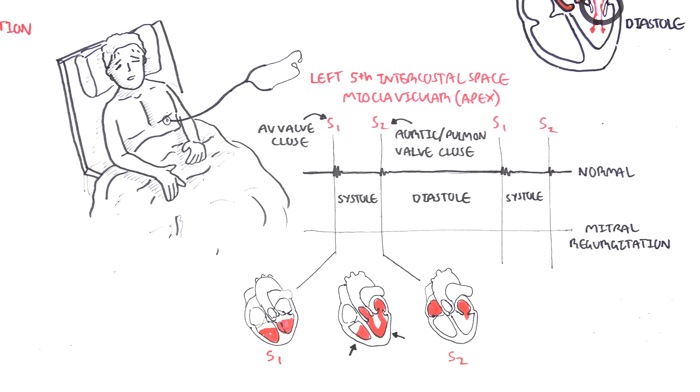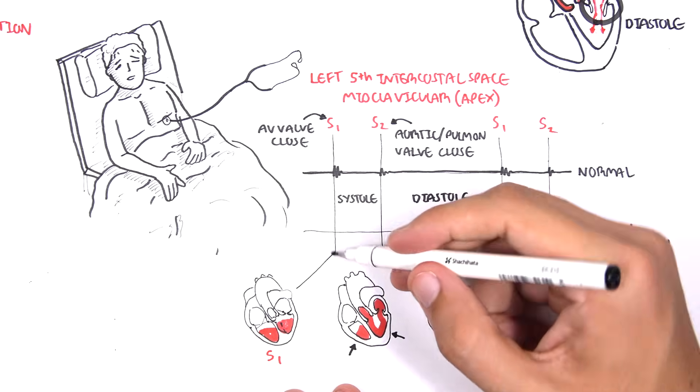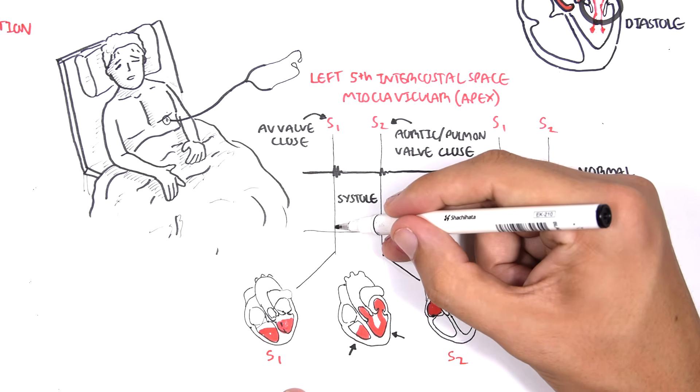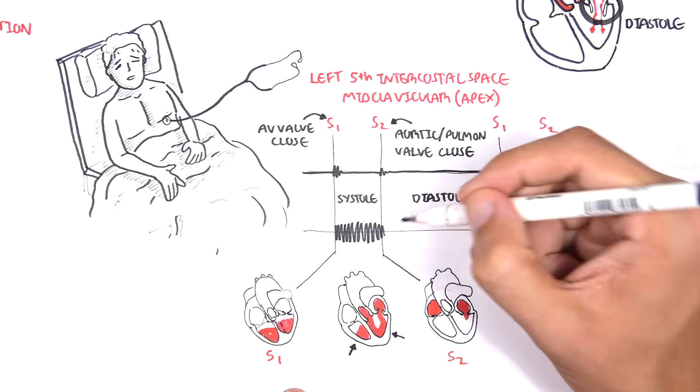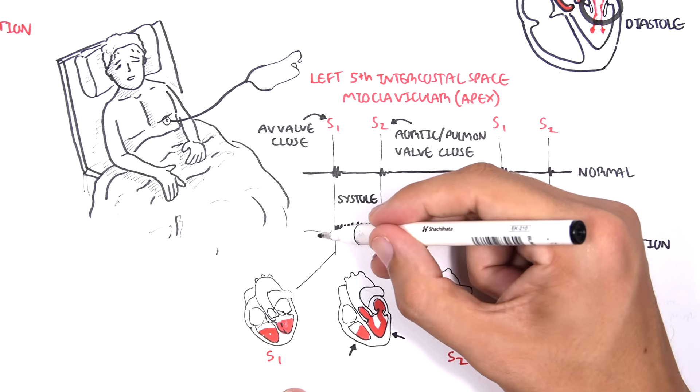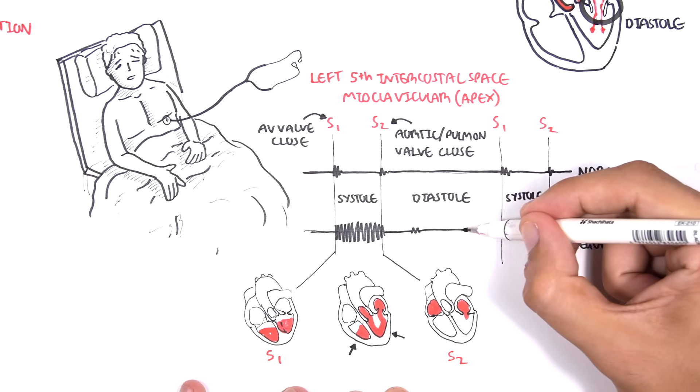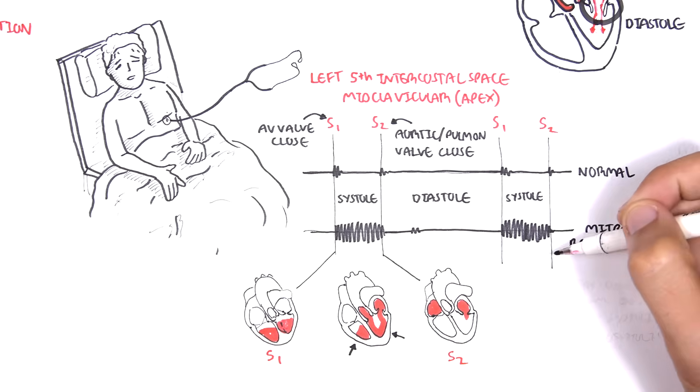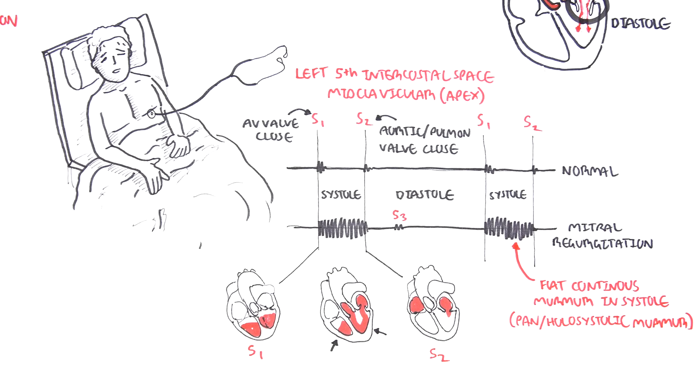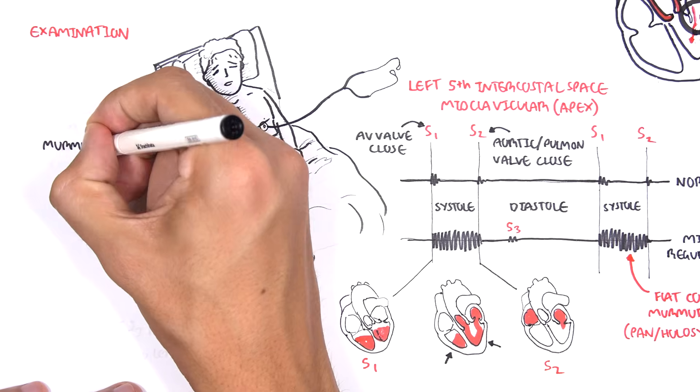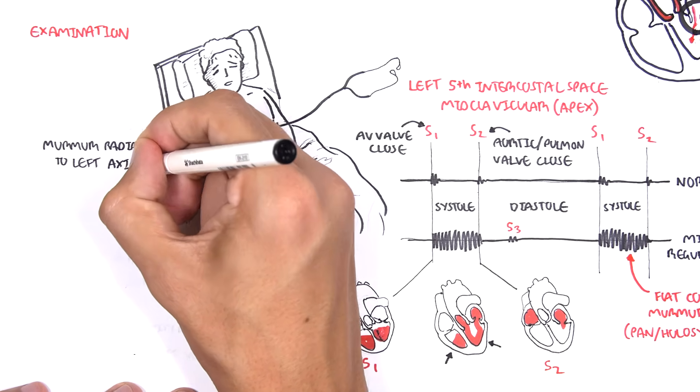In mitral regurgitation, the murmurs are heard during systole, when the ventricles are contracting to push blood out of the heart. But because the mitral valve is not closed properly when it is supposed to, we hear a murmur from when the ventricles are contracting, and it goes throughout the whole of systole. This murmur for mitral regurgitation is a flat, continuous murmur in systole, also called a pan- or holosystolic murmur. It is also important to know that the murmur radiates to the left axilla.